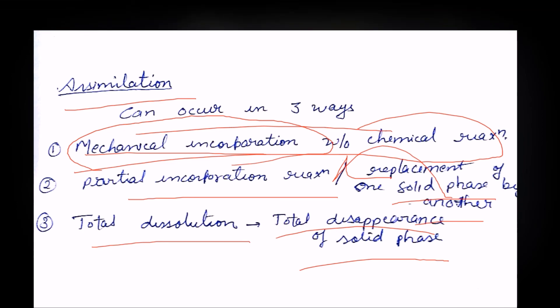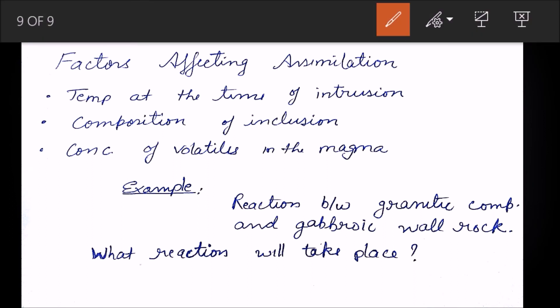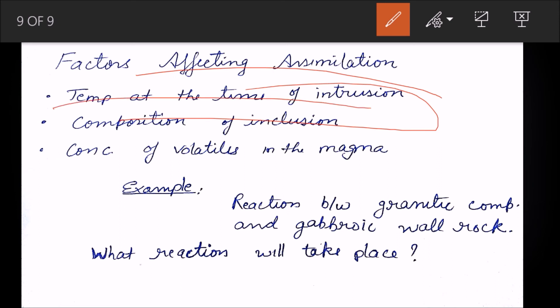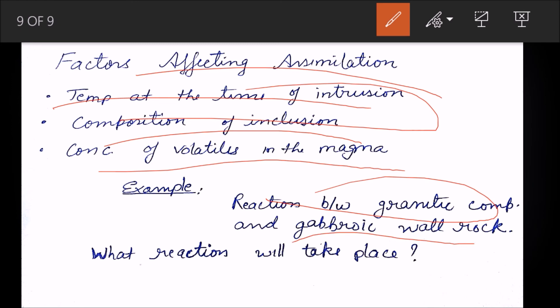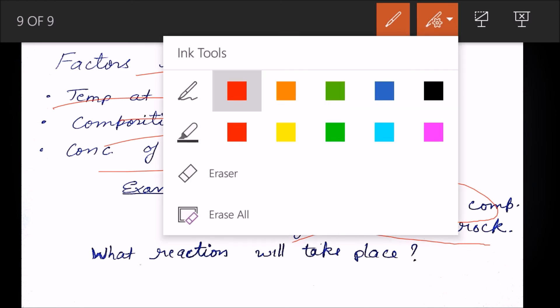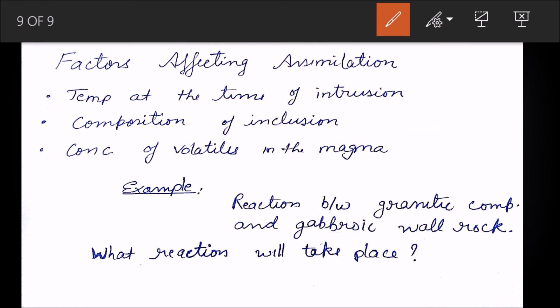The factors on which assimilation depends are: temperature, which plays a key role since the reaction happens at the interface during intrusion; composition of inclusions being assimilated; and concentration of volatiles in the magma. For example, consider a reaction between a granitic composition and a gabbroic wall.